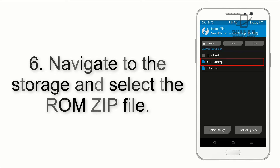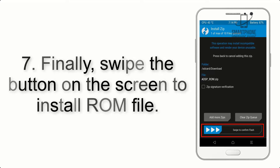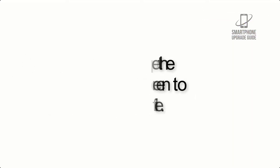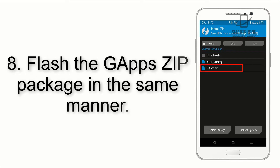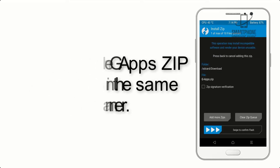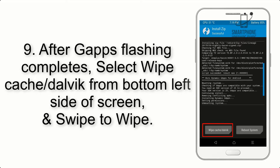Step 6: Navigate to the storage and select the ROM zip file. Step 7: Finally, swipe the button on the screen to install the ROM file. Step 8: Flash the GApps zip package in the same manner.